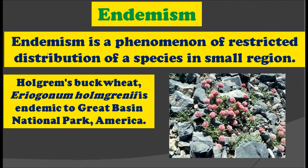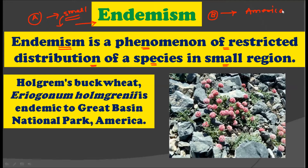First of all, what is endemism? Endemism is a phenomenon of restricted distribution of species in a small region. That literally means if some species — say species A — is restricted to a very small area and not found in any other area, then we call that species an endemic species. Similarly, consider species B which is restricted to America only; that species is also called endemic to America only.